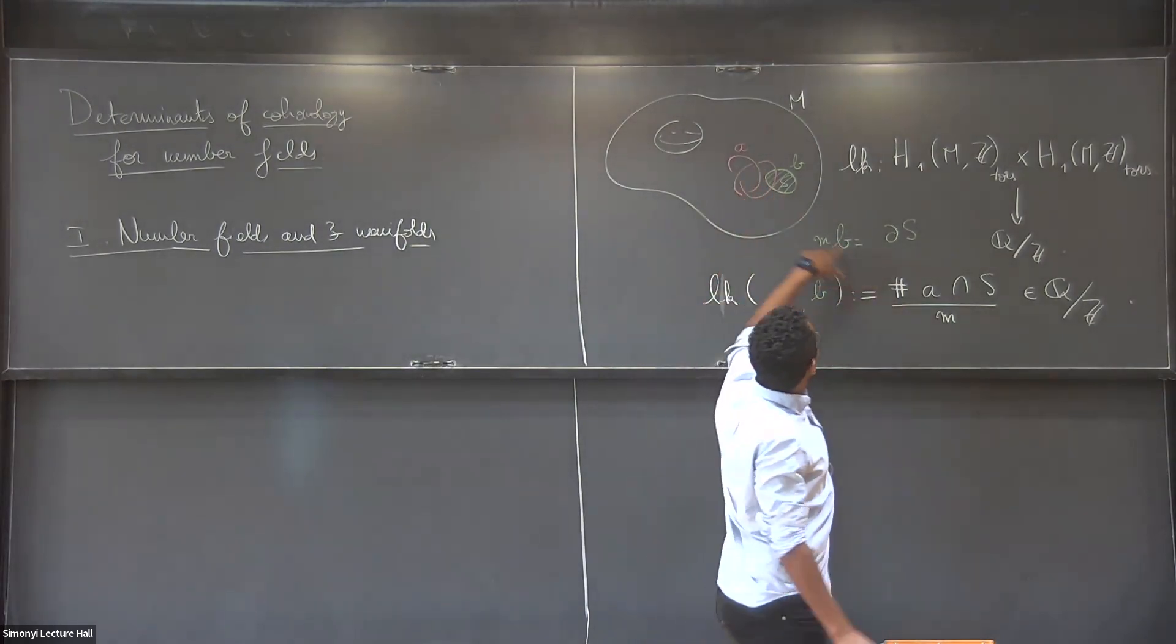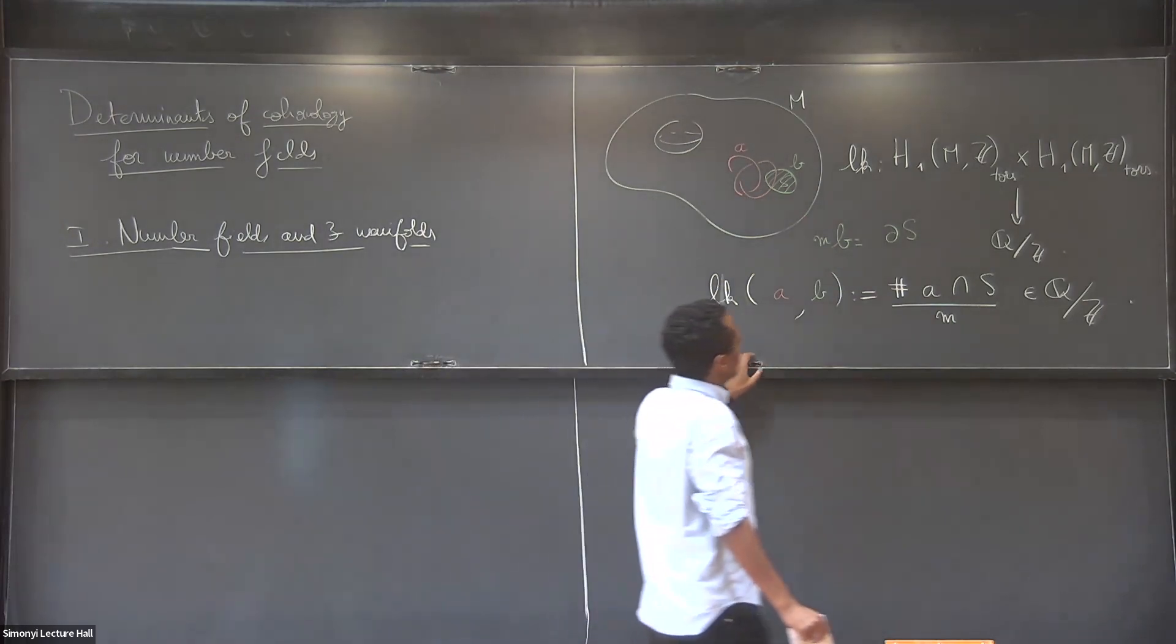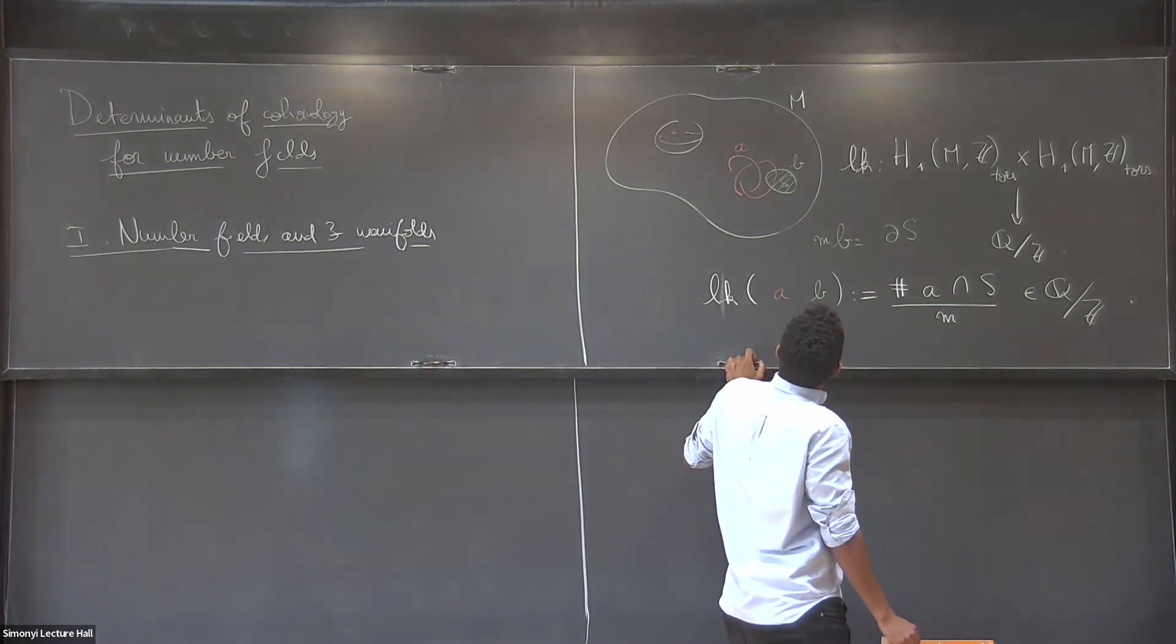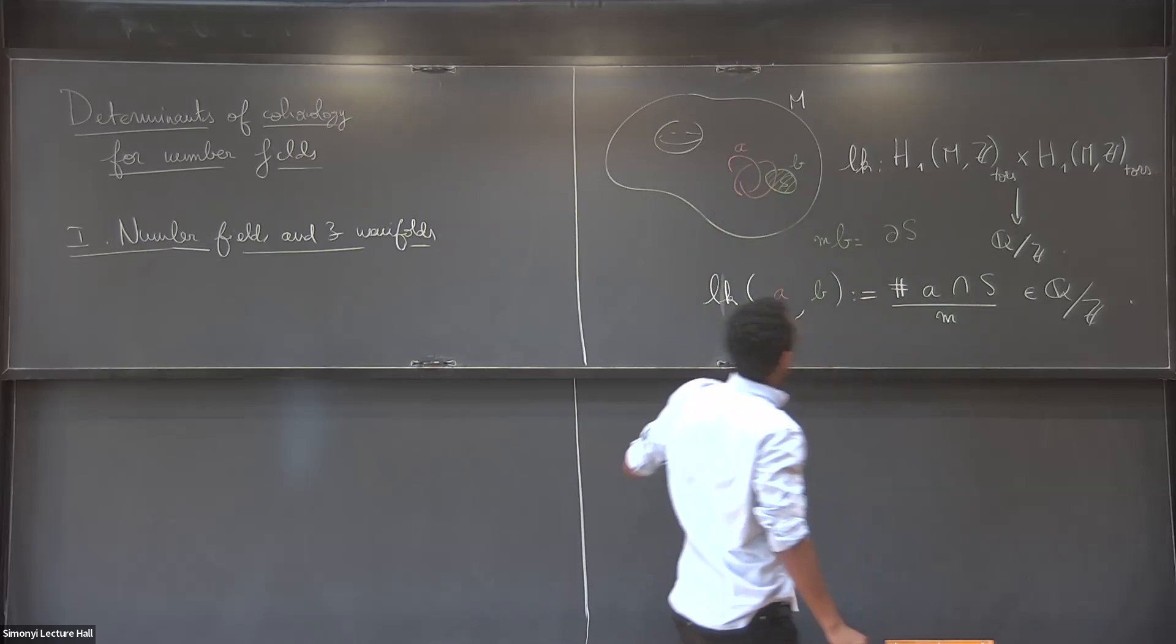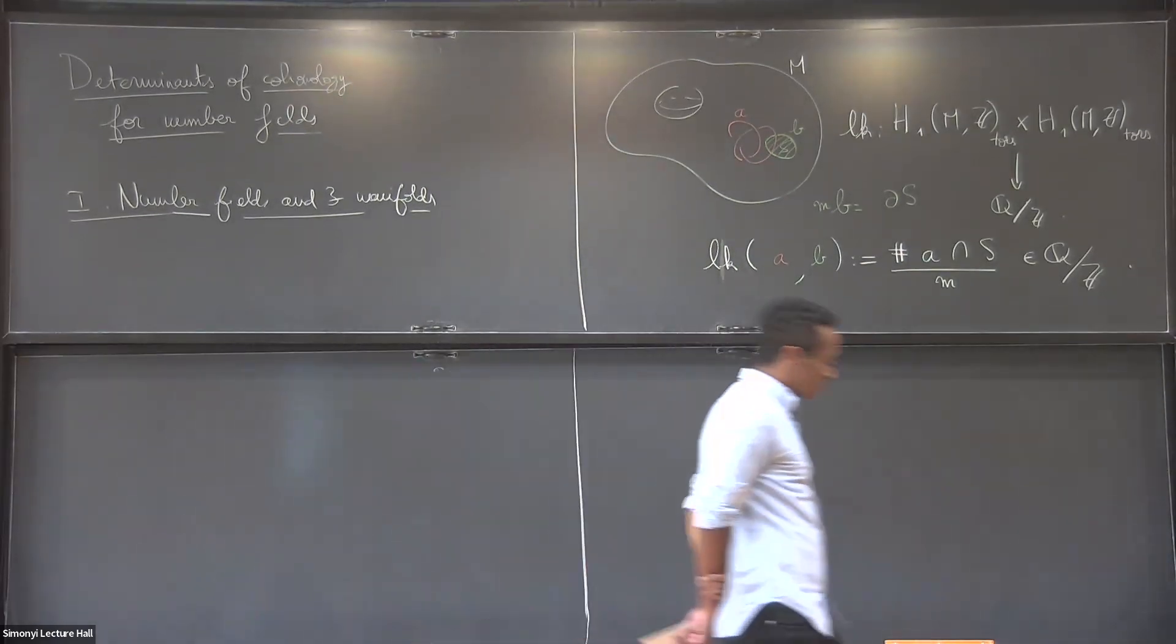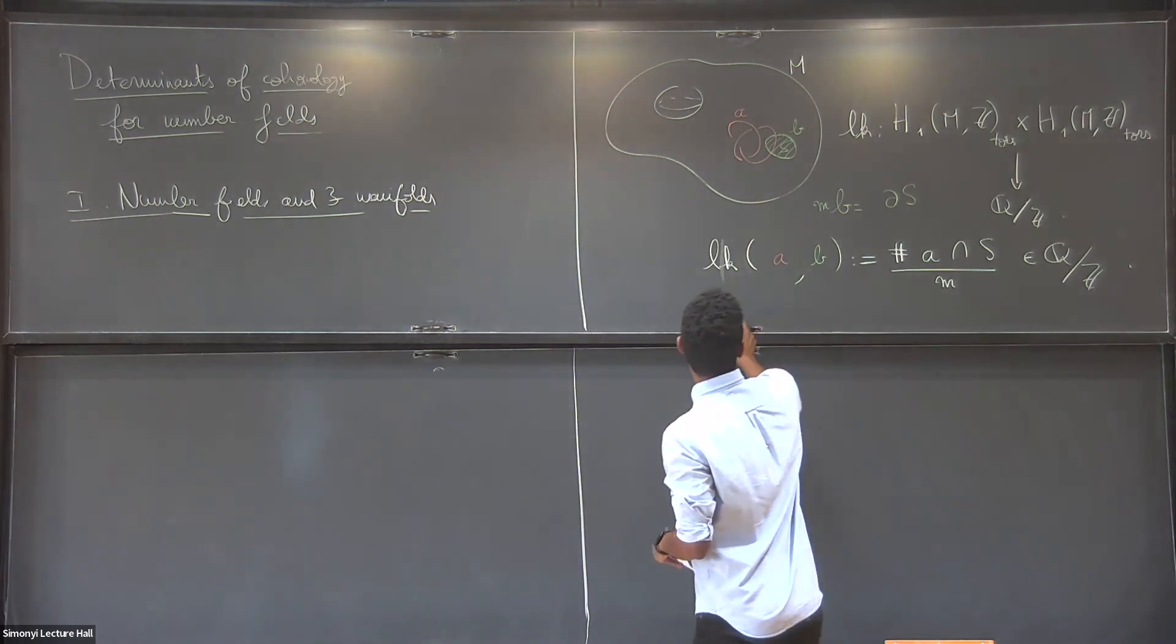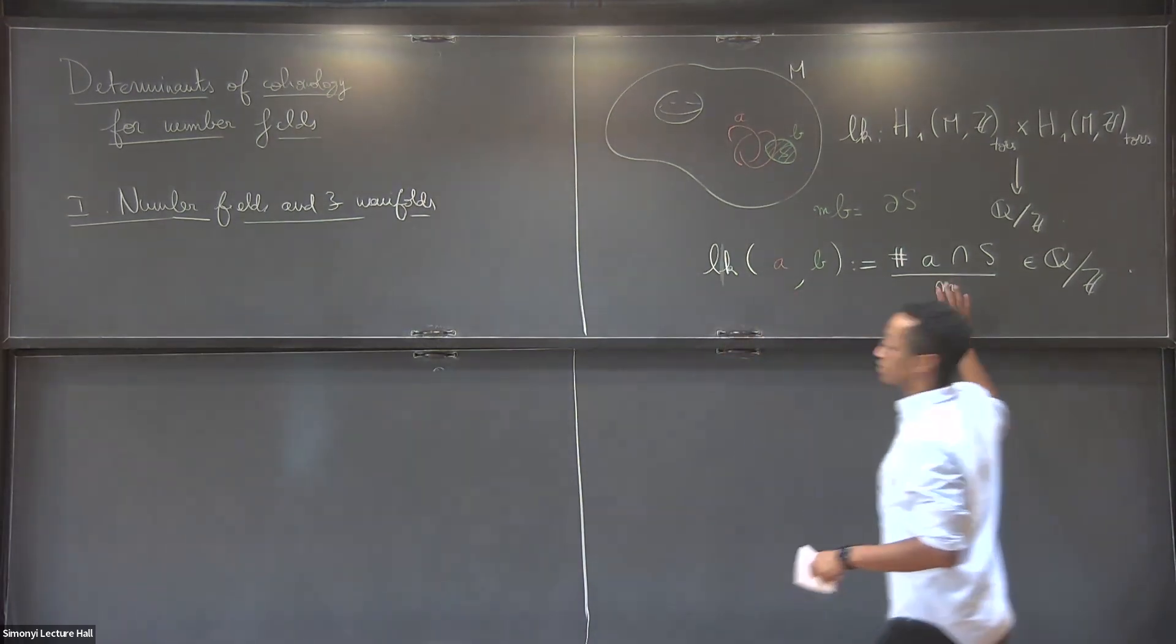So you should think of this as counting how many times A loops around B. In this case, M is going to be 1 because you see it's just the boundary of a disk. But you can have sort of fractional loopings. So this turns out to be a bilinear structure on your torsion homology. It turns out to be symmetric. So the linking of A and B is equal to the linking of B and A. It's not completely obvious from this definition.